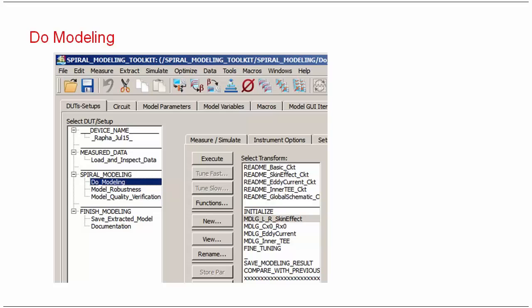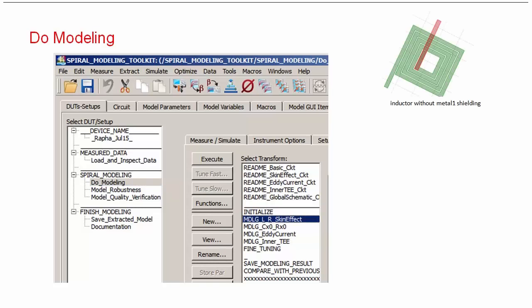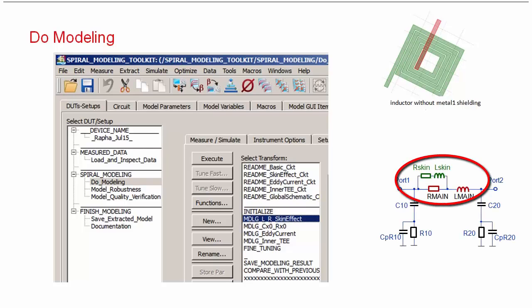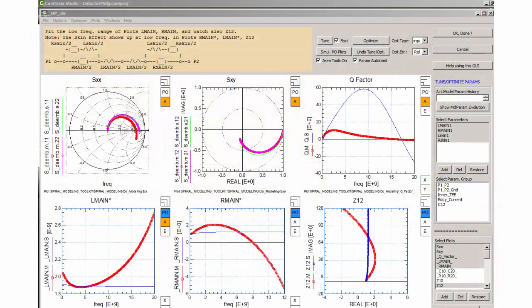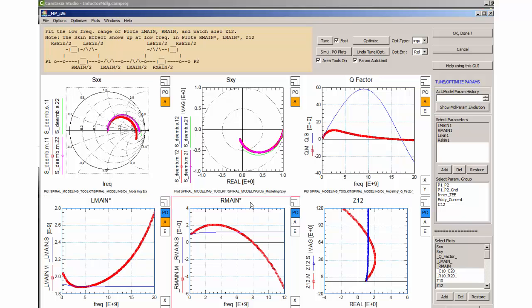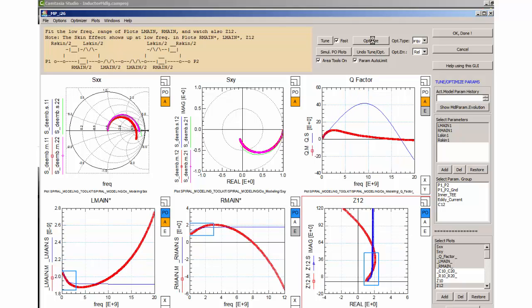I am using Keysight's IC-CAP software to demonstrate the step-by-step modeling procedure. Let's start, like in the tutorial before, with the inductor without metal one shielding. I have already loaded the measurement data and begin with modeling the main inductor, resistor and skin effect. Hitting Modeling LR skin effect opens a window with predefined plots and model parameters. I select the plots L main star, R main star and Z12 and define the low frequency range for the parameter optimizer. After two quick optimizer runs, I get a good fit for the skin effect in all three plots.